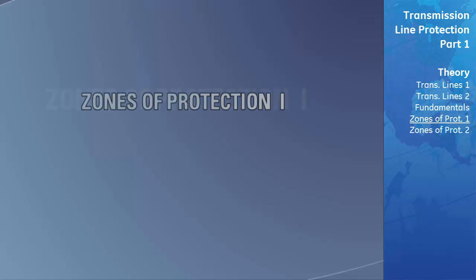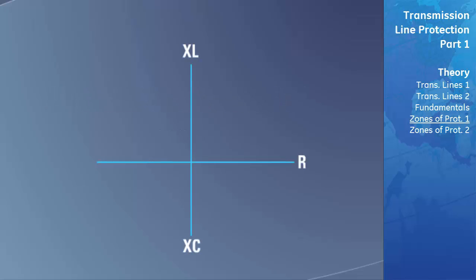To program distance relays, you need to configure the impedance of the line where any impedance less than this value will indicate a faulted line. This is done in modern distance relays by creating zones of operation on the RX diagram. If the impedance calculated at the point of measurement of the power system ever falls within this zone, the relay will trip. These zones fit into the following operating characteristics.